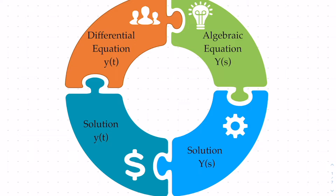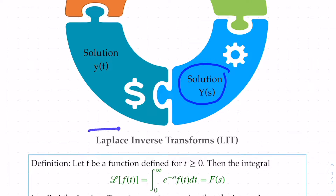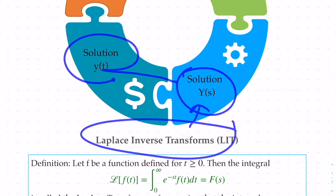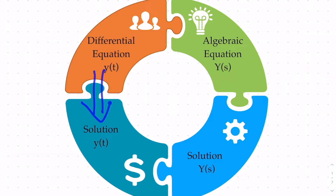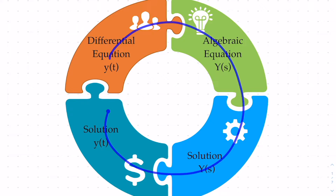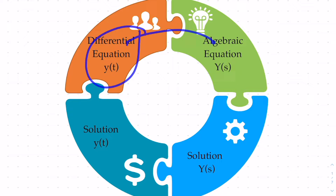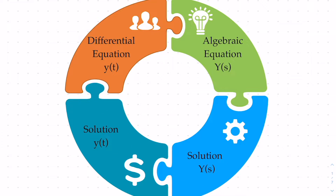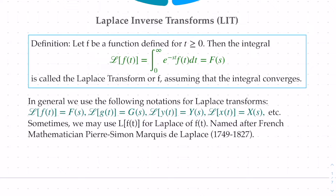The solution you're going to have is capital Y of s — we'll talk about what that means in a moment. Once you have the solution Y(s), we're going to take the inverse Laplace transform to get the solution y as a function of t. That's how we get the solution to this differential equation. We start here, do the Laplace transform, get the algebraic equation, find the solution, do the inverse Laplace, and then get y(t). That's a process similar to what we've been doing earlier.